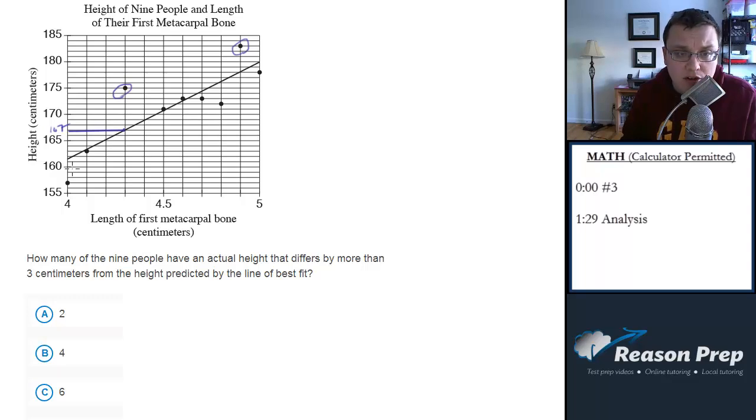So it's going to be one, two, three, four. This one counts, and this one should count, one, two, three, four. Yeah, the others are within three, so the only points that are three centimeters away in height from the predicted height based on the best fit line is going to be these four.